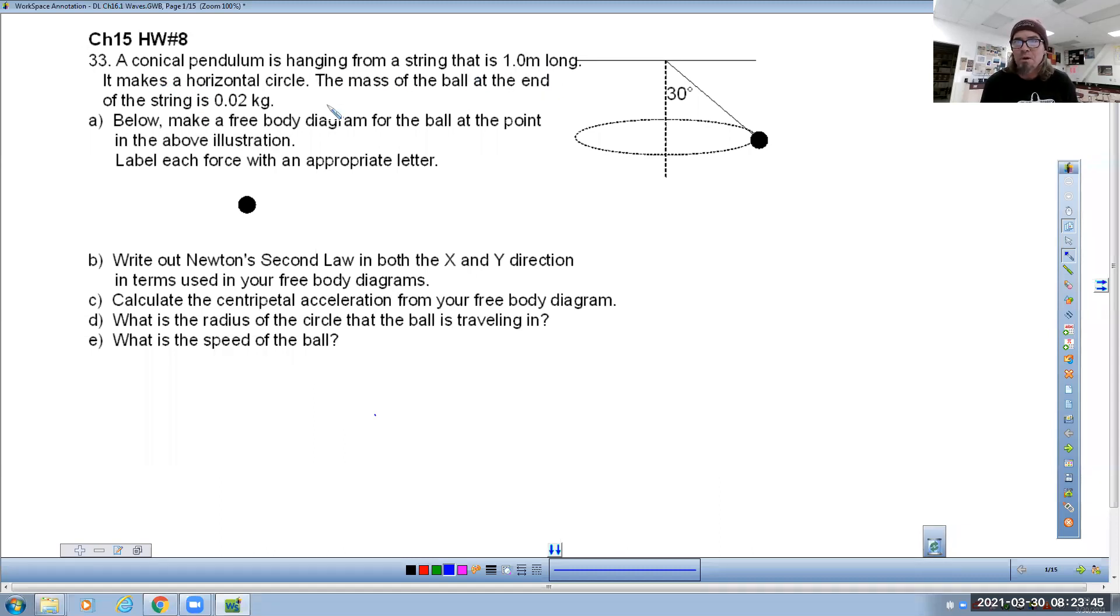Anyway, I just needed to rant. Question number 33, last problem. A conical pendulum is hanging from a string that is 0.1 meters long. It makes a horizontal circle. The mass of the ball at the end of the string is 0.02 kilograms. Make a free body diagram for the ball at the point in the illustration. Label each force with an appropriate letter. So in your test booklet, you would simply put there's a force this way and there is a force this way. Then you would transfer that to your answer document. So you're going to put an FG and you're going to put an FT.